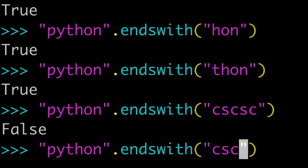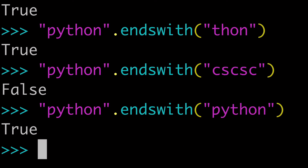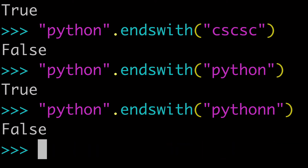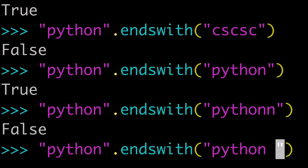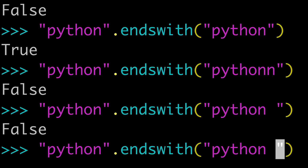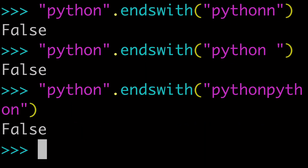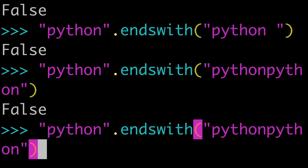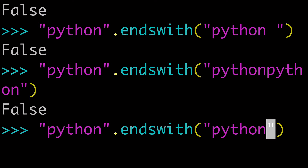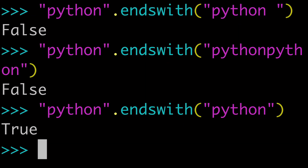What if we pass the entire string? Do you think that's going to be true or false? Well, it's going to be true — Python does in fact end with Python. But anything more and we're going to get false. If you added even a space, that's going to be false. If you tried to pass it twice like 'pythonpython', that's going to be false. So basically, the rule is that you can pass up to and including the entire original string.